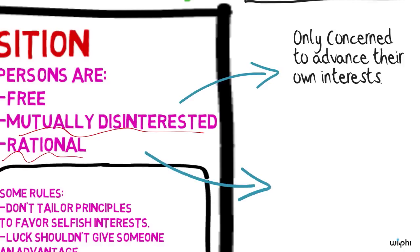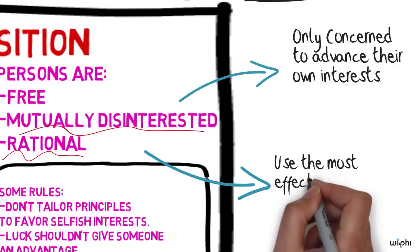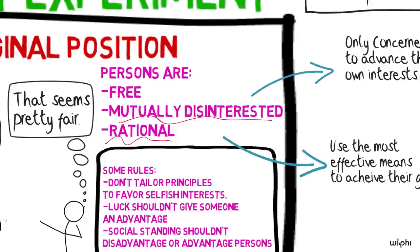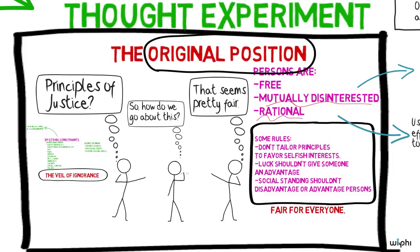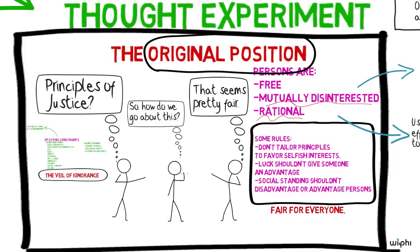And the agents' decisions in the original position are rational in that they use the most effective means to achieve their goals. To wrap up, the original position is a fair situation where agents who know nothing in particular about themselves but know only general facts agree upon principles of justice that we use to decide how to set up a just society. Thank you.